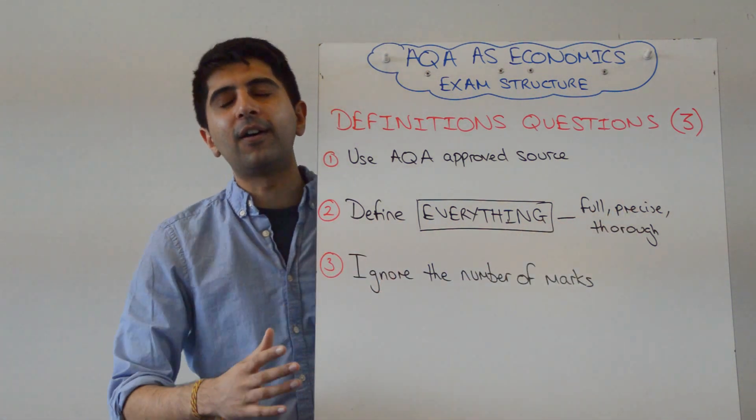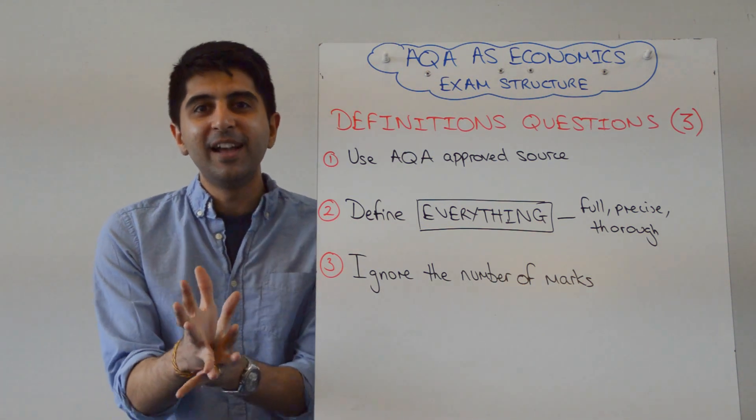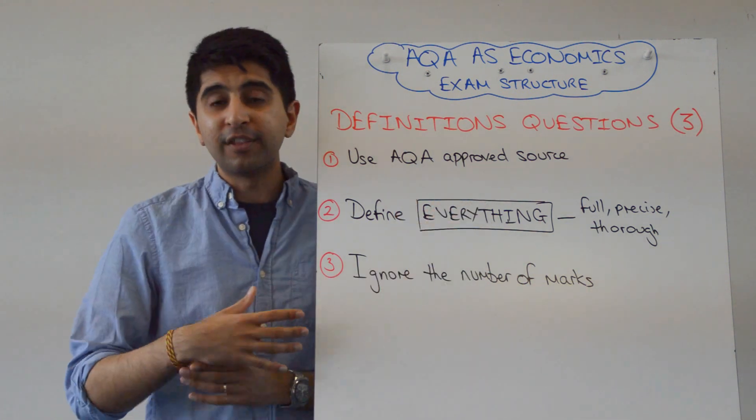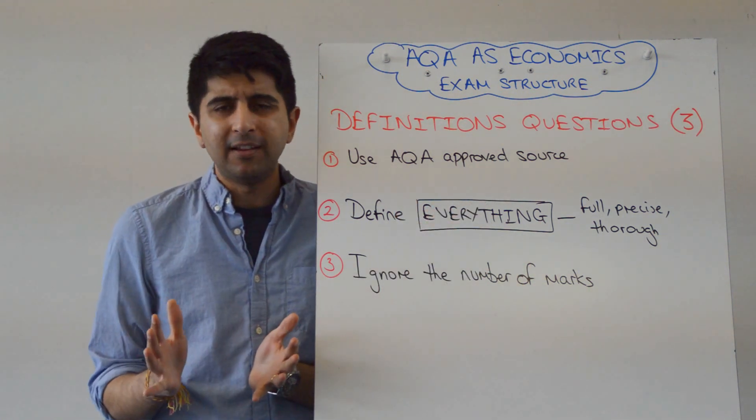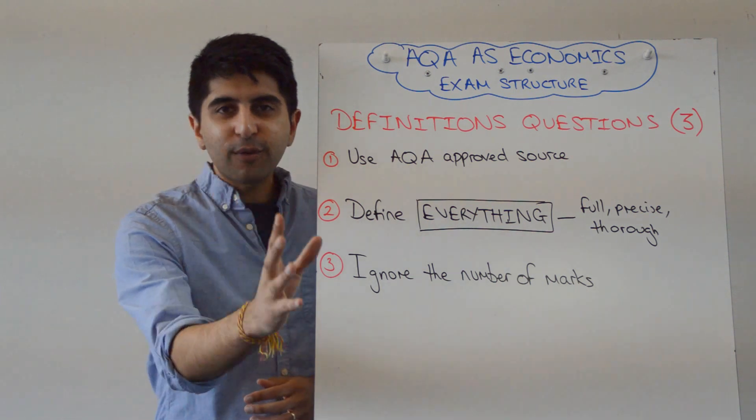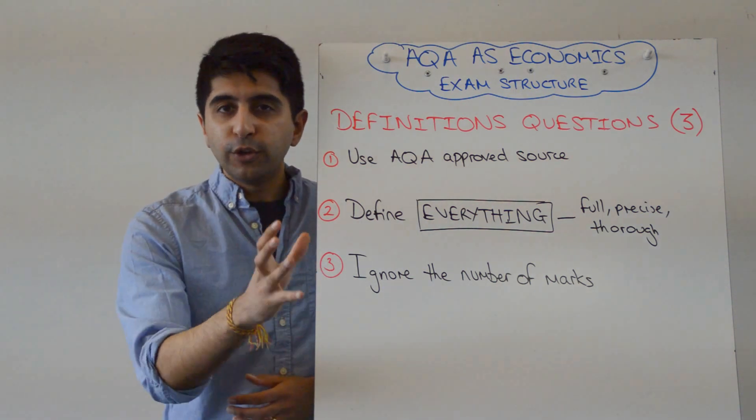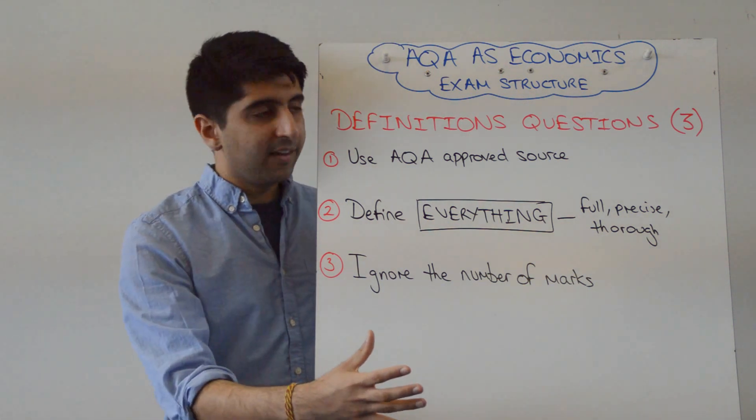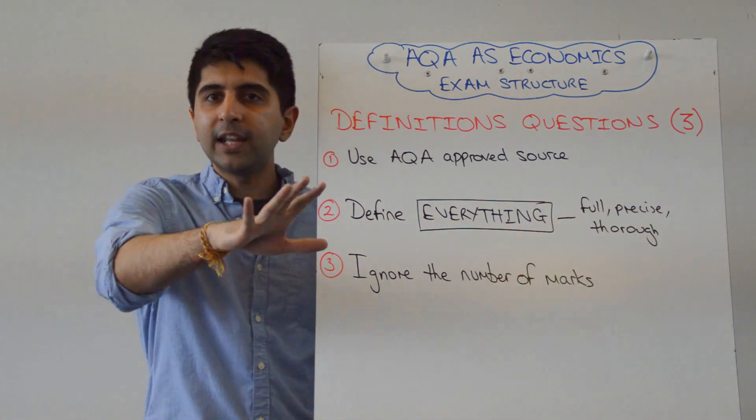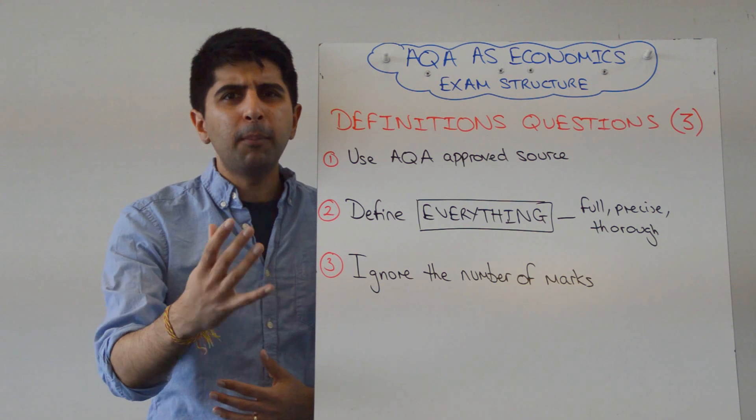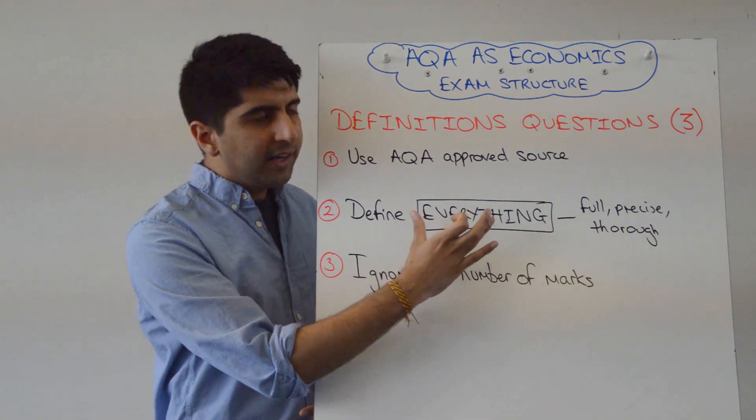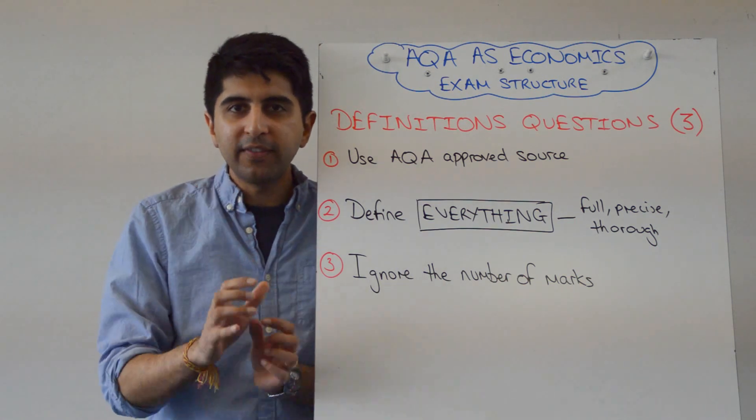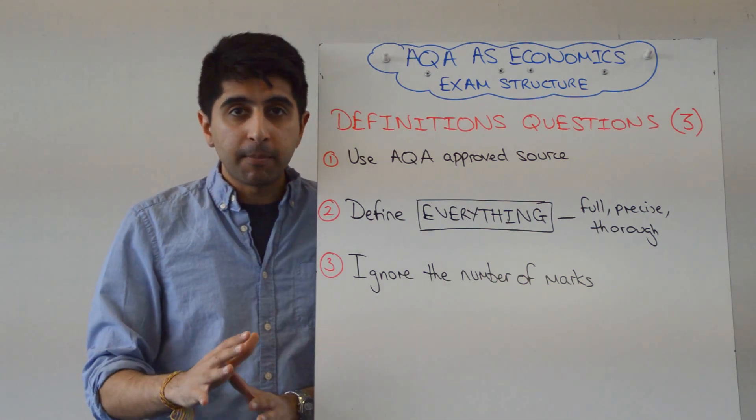Last thing, every time AQA students always get a little bit muddled by the number of marks. Just because it's worth three marks, don't worry about it. You just write down what you know. What you know the definition is. You've learned it, even if it's only a few words, write it in. If it's full, precise, and thorough, you're going to get your three marks. Don't worry about how much you need to write. Defining something is defining something. Quantity doesn't matter. Just write the definition down. Ignore the number of marks.